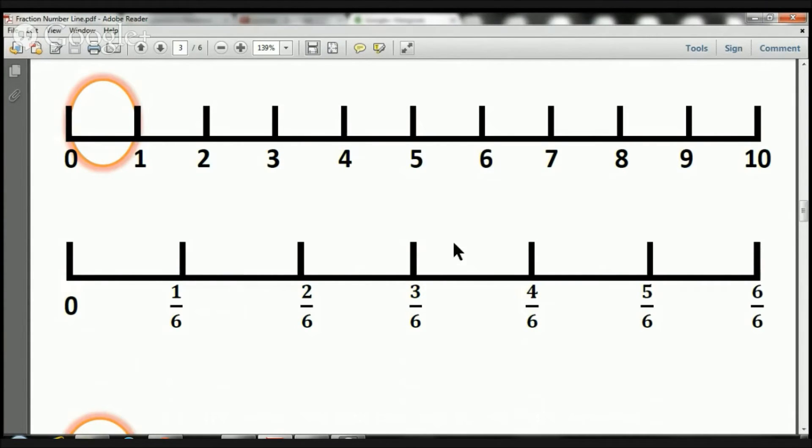We've got 1, 2, 3, 4, 5, 6 pieces. Let me remind you that we have our numerators up here. We have our denominators down here.